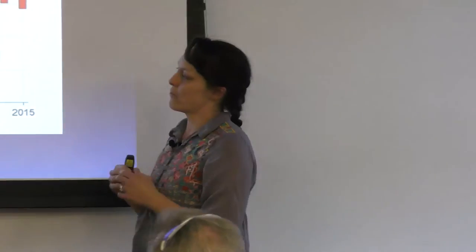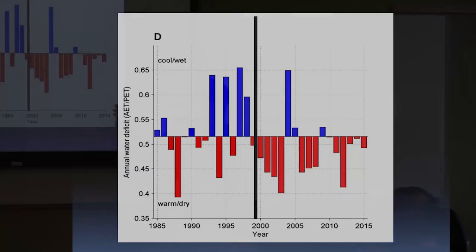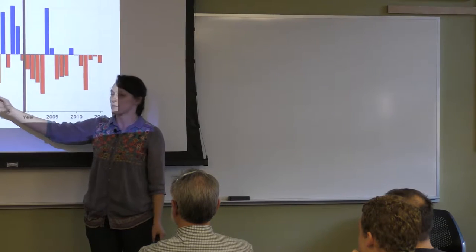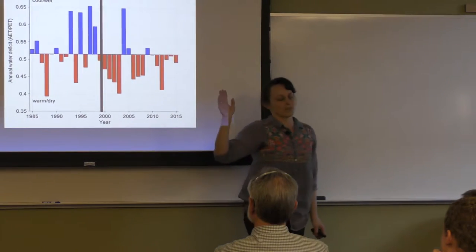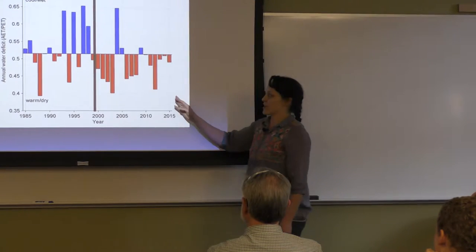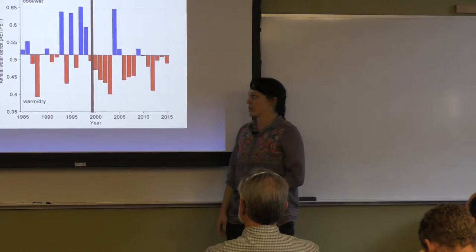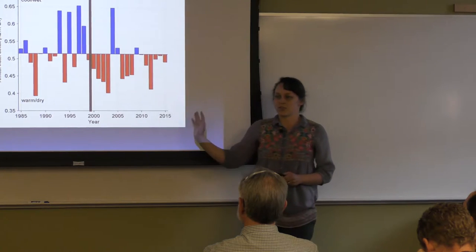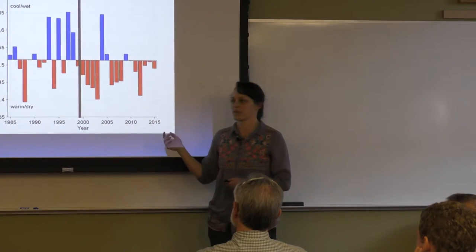When we think about what effect climate might be having on these sites, this shows the mean annual water deficit across all of our sites for our time period — fires from 1988 to 2011. Before 2000, with some exceptions, it was generally a wetter and cooler period compared to post-2000, where we only have about three years above the average of this climate window. We chose to split the data into these two time frames to look at whether there are different patterns in tree regeneration before versus after 2000 with this drying period.